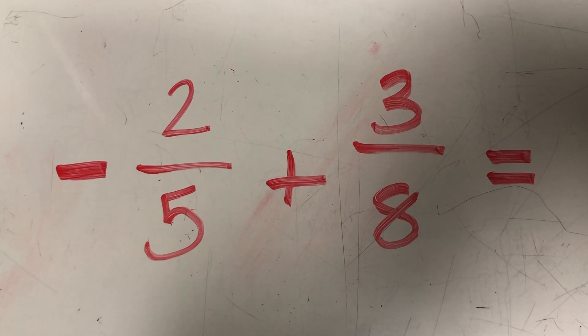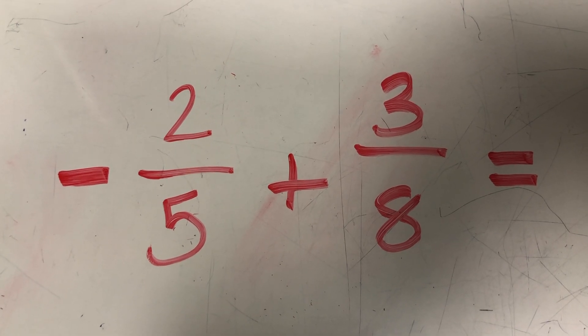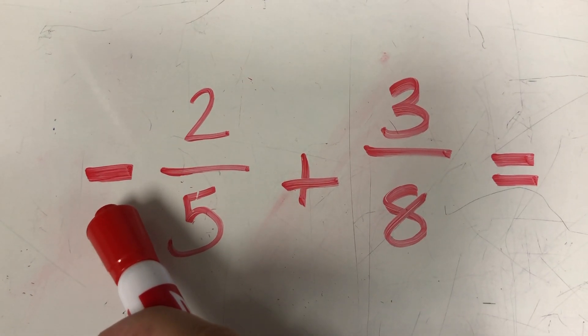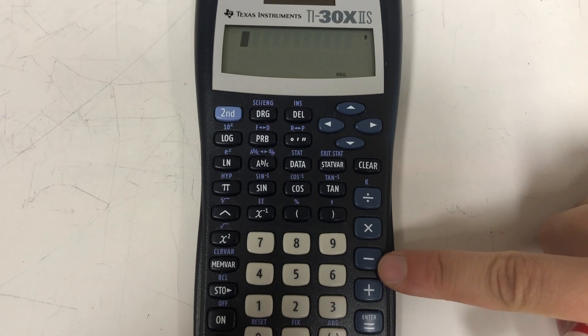This is the problem we're going to start with. We'll move on to a second example with some mixed numbers next. The very first thing we see is that there's a negative in this one. So when you take a look at your calculator, a lot of people are tempted to push this key for subtraction when they need a negative.